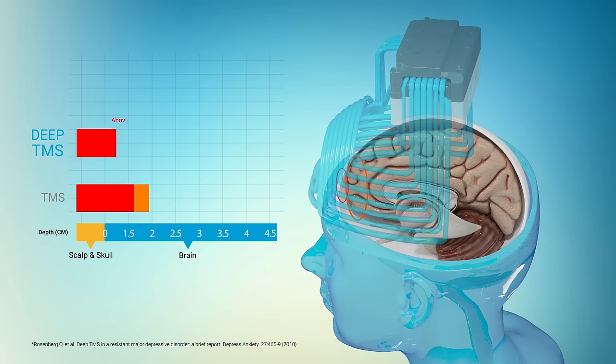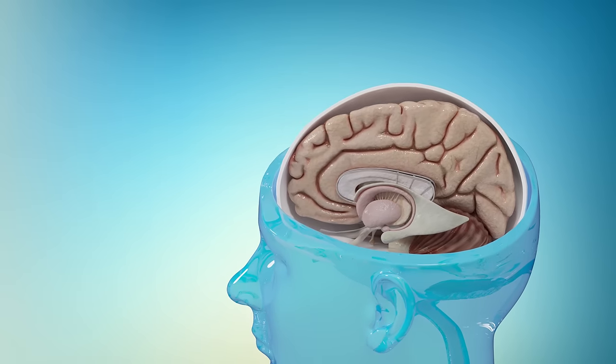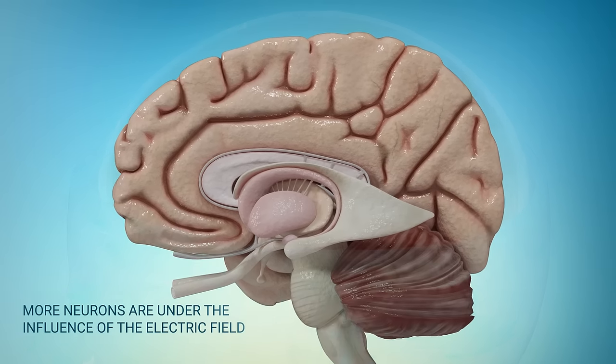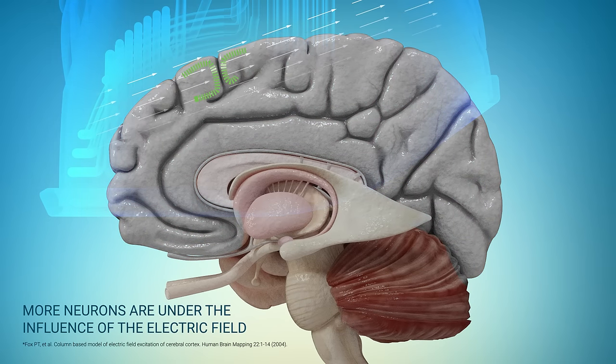Brainsway DeepTMS H-Coil is uniquely configured to produce a field that has a slow rate of decay, allowing it to sustain its strength deeper in the brain. Deeper penetration means that more neurons are under the influence of the electric field induced by the Brainsway coil.